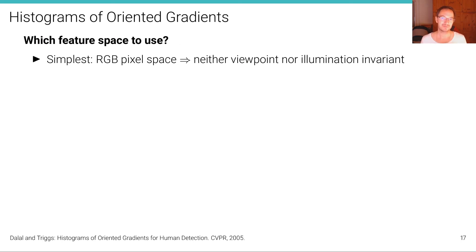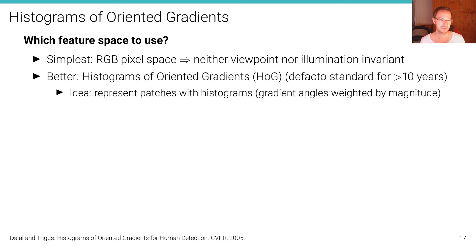The next question we have to answer is which feature space should we use? On which feature space should the support vector machine classify these little crops? The simplest we can do is use the RGB pixel space. But as we've already seen in the introduction unit, this would be neither viewpoint nor illumination invariant.